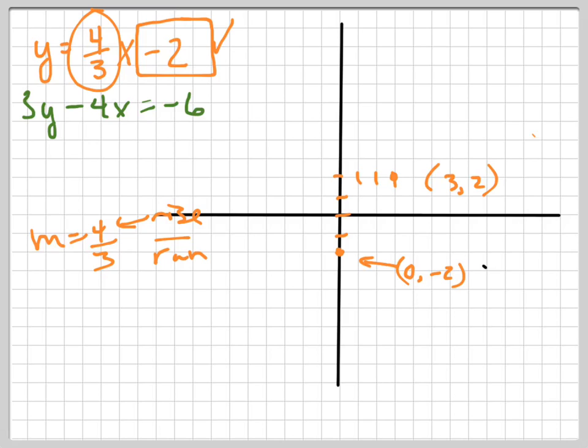Let's check (3, 2) in here. Does that work? The 3's cancel. What's 4 minus 2? 2. Sure enough, (3, 2) is a point.